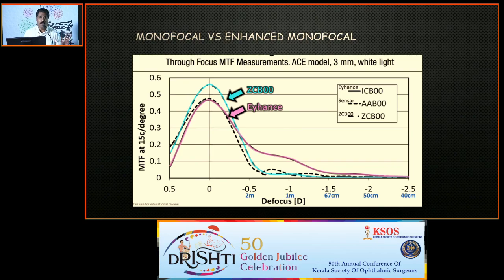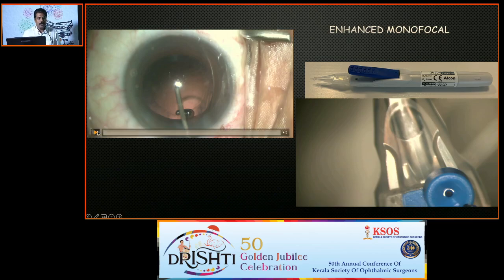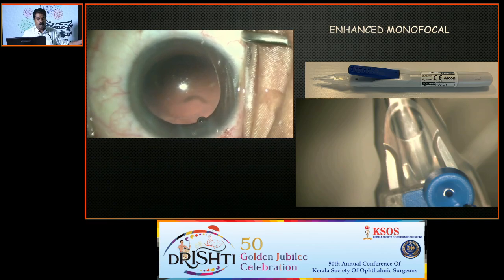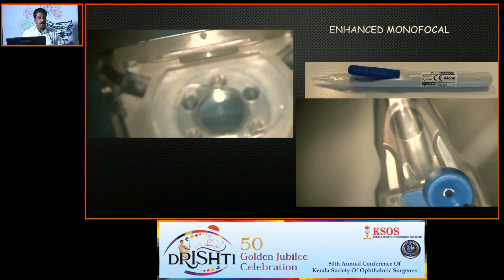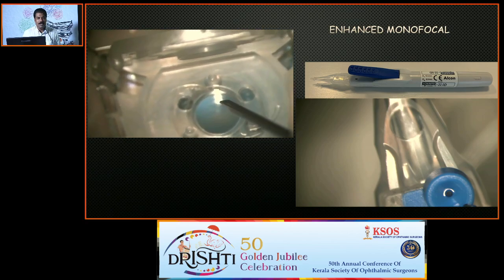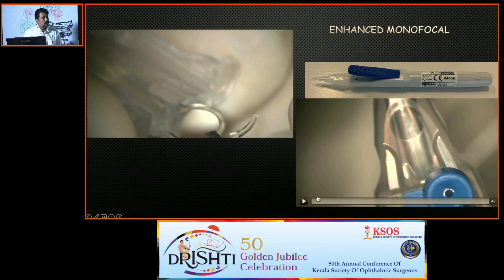Never think that these lenses will give near vision — they won't. But at least 60 centimeters is achievable. The extra intermediate power is taken from the distance focal zone and added to the intermediate range. In my practice, I use the Eyehance lens; it looks just like a Tecnis lens and even the surgeon cannot differentiate. The Clareon from Alcon is another enhanced monofocal. It comes preloaded with a CO2 gas-pressured injector — you simply press it and the gas pushes the IOL. Delivery with the Clareon is very smooth.